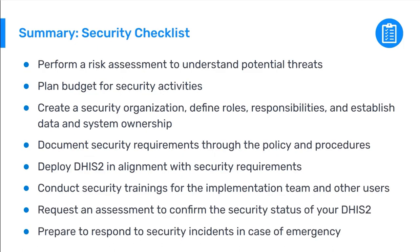Here is a brief checklist on how to implement your security program. First, perform a risk assessment to understand potential threats. Plan a budget for security activities with respect to those threats. Create a security organization — define roles, responsibilities, and establish data and system ownership. Document security requirements in policies and procedures. Deploy DHIS2 in alignment with security requirements. Conduct security trainings for the implementation team and other users. Request an assessment to confirm the security status of your DHIS2 installation, and prepare to respond to security incidents in case of emergency by training your staff.